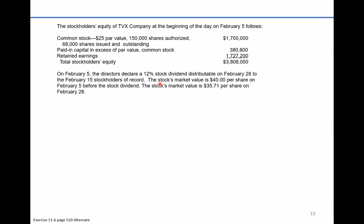The problem reads that the stockholders' equity of TVX Company at the beginning of the day on February the 5th is as follows. Common stock, $25 par value, 150,000 shares authorized, but only 60,000 shares issued and outstanding, with a total value of $1,700,000 in the common stock account. Paid-in capital in excess of par value common stock was $380,800. Retained earnings is $1,727,200. Together, the stockholders' equity section totals $3,808,000.